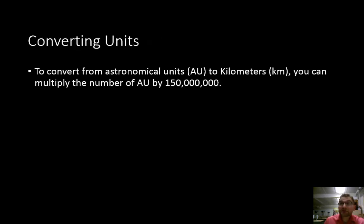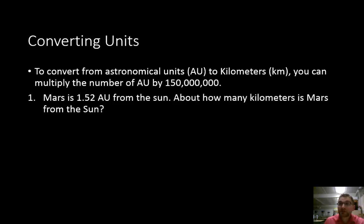So let's do some converting of units. To convert from an astronomical unit, an AU, to kilometers, you can multiply the number of astronomical units by 150 million. So let's try some calculations. Mars is 1.52 astronomical units from the sun. About how many kilometers is Mars from the sun?